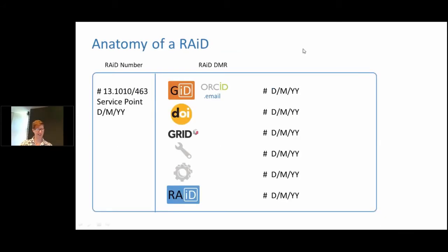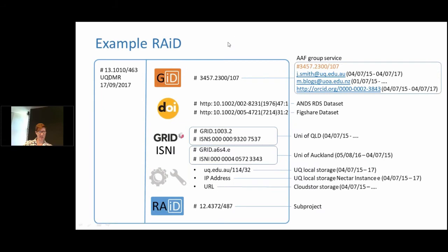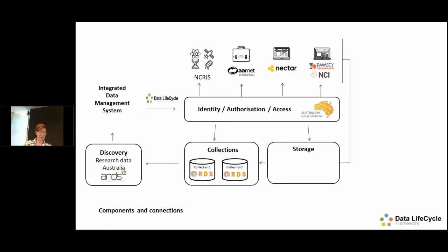Here's what a RAID looks like on a conceptual level. On the left is the RAID number — it's really simple: service point, day, month, and year that it's minted. Attached to it are potential spaces: space for the group ID (which can include ORCIDs or email), DOI, GRIDs or ISNIs, tools, services, and other RAIDs. The RAID, being a simple handle, actually has a lot of information attached to it — but it doesn't hold any data, it's just metadata. It's a bag of pointers that gives you a timeline of what's happened during the project. By using simple persistent IDs, we can link up pre-existing infrastructure, semi-automate things, make research easier, and make tracking research easier.